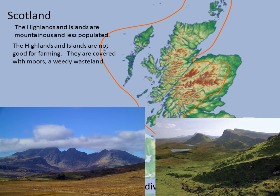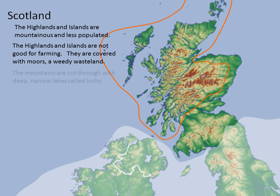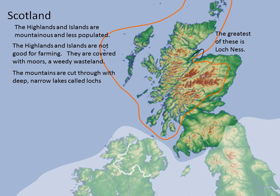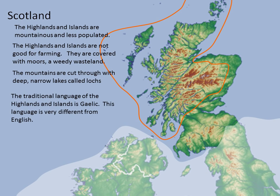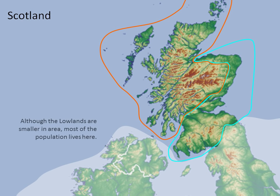The highlands and islands are not good for farming. They're covered with moors, a weedy wasteland. The mountains are cut through with deep, narrow lakes called lochs, with the most famous being Loch Ness, and also the largest in size. The traditional language of the highlands is a Gaelic language, which is very different from English. Although the lowlands are smaller in area, most of the people live here, with cities like Edinburgh and Glasgow.